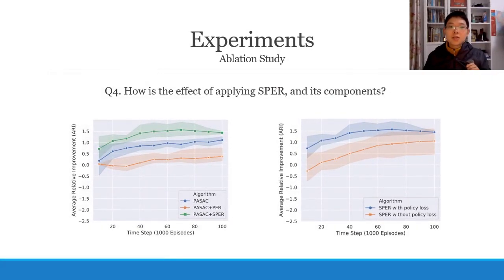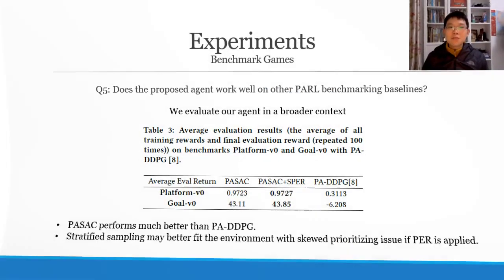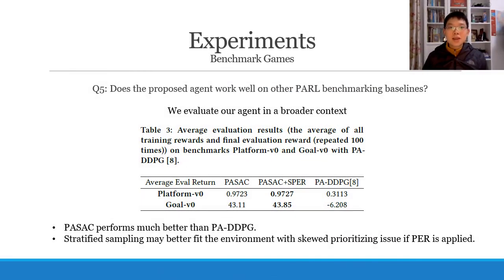To answer question four, we performed an ablation study on each component, with results explicitly showing the superiority of each contribution. We also evaluated our agent in a broader context: PA-SAC performs much better than PA-DPG on two benchmarking games that also have parameterized action settings. Stratified sampling fits better in environments with a skewed prioritizing issue, while the first two results are almost on par.